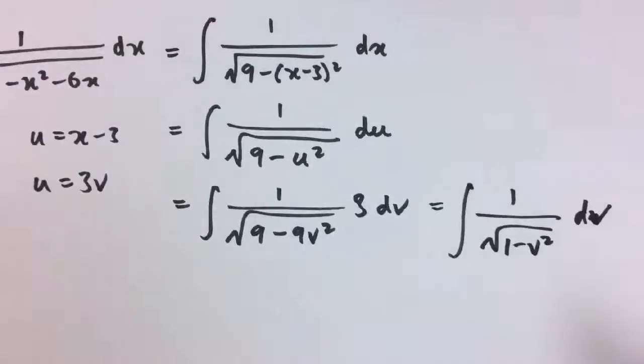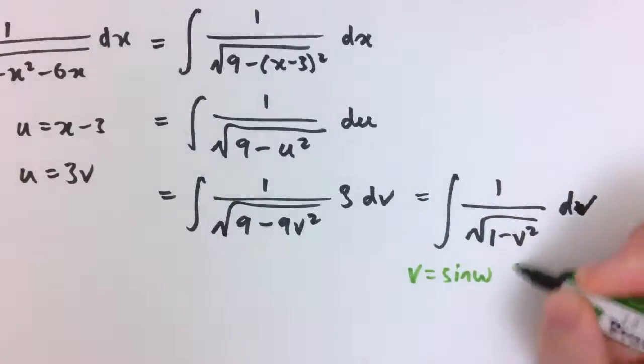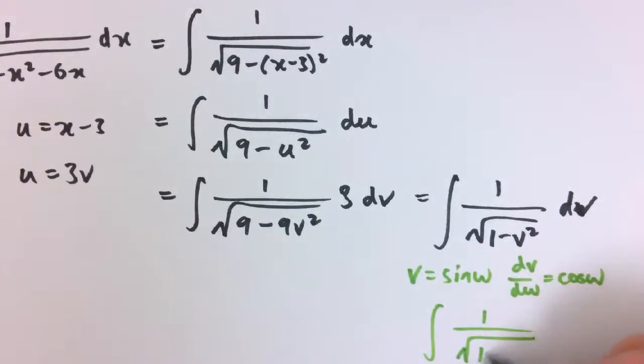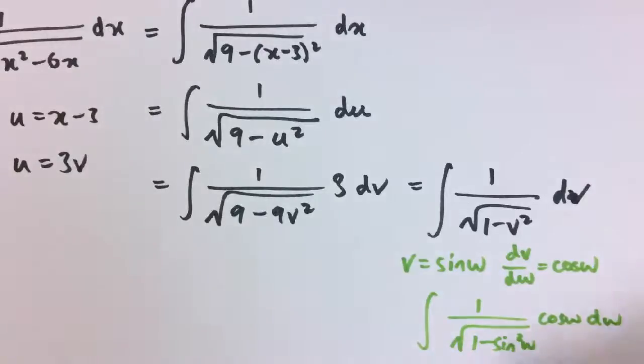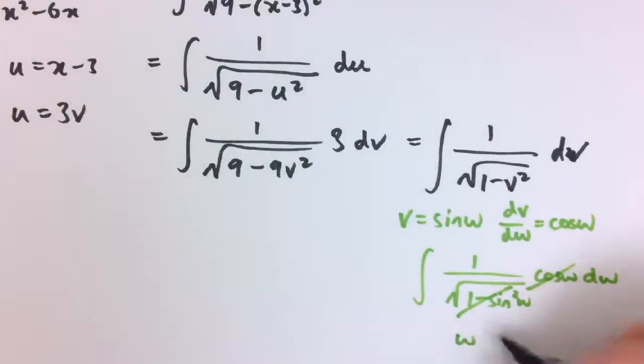At this point you might just recognize this as the derivative of arcsin of v. But if you don't, you can make a further substitution and say v equals sin w, so dv by dw equals cos w. So this integral becomes the integral of 1 over the square root of 1 minus sin squared w times cos w dw. And then we've got 1 minus sin squared is cos squared, so the square root of cos squared is cos, so they cancel. The integral is just 1 dw here, so that's just w plus c, which is arcsin of v.